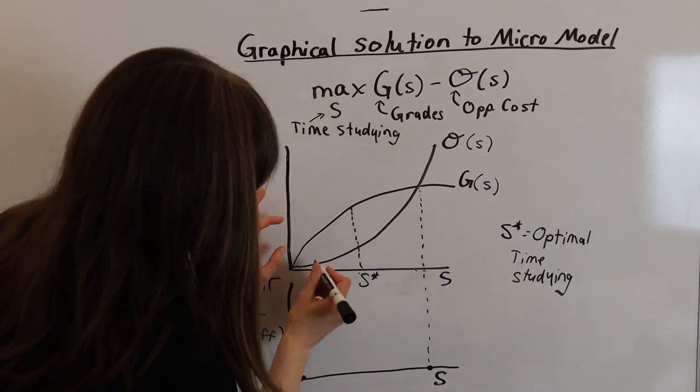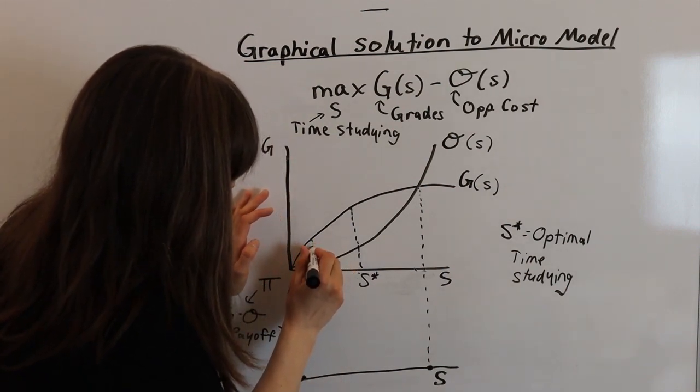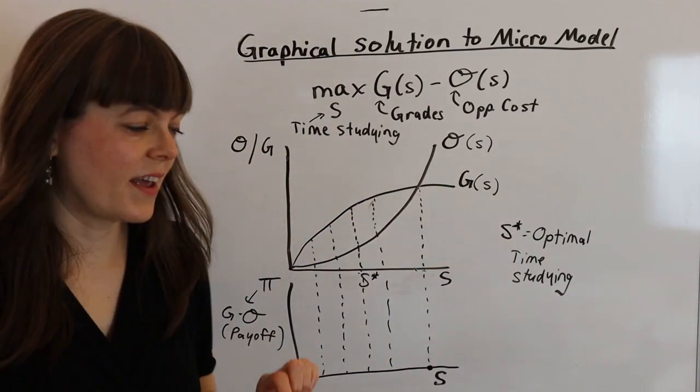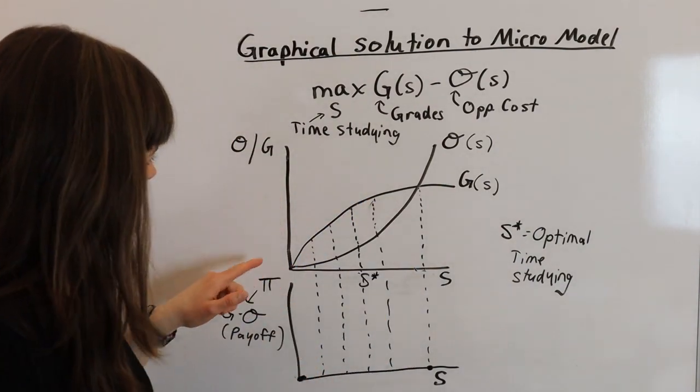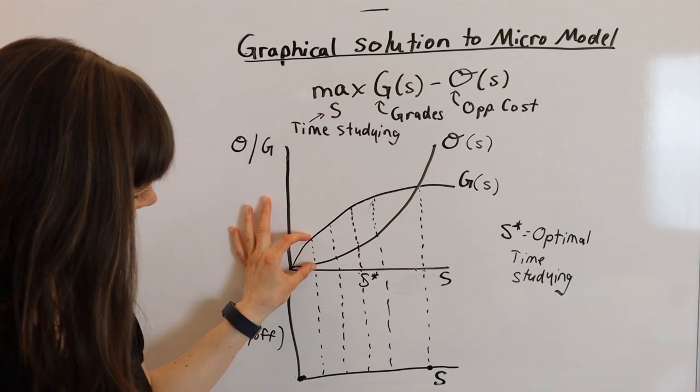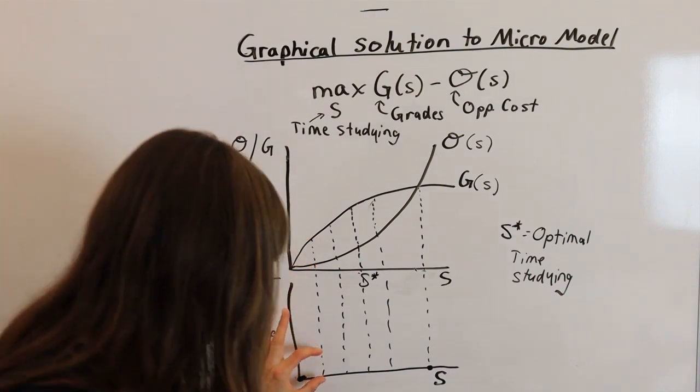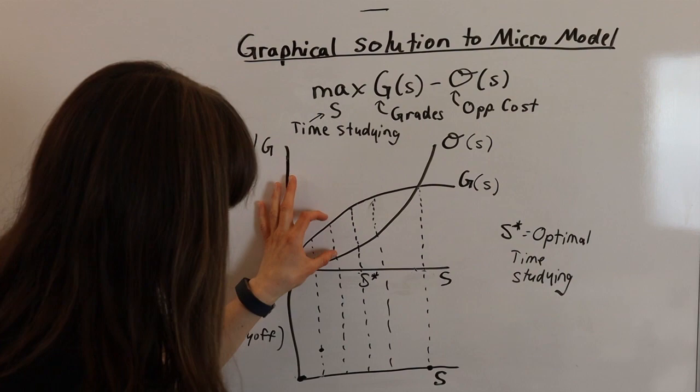Now, I can take any given point. Let me pick a few random points. So to find what is grades minus opportunity cost, that's going to be the difference between these two curves, which I can come down here and graph.